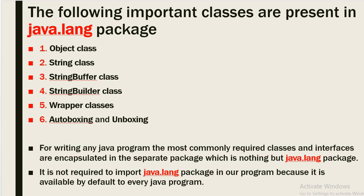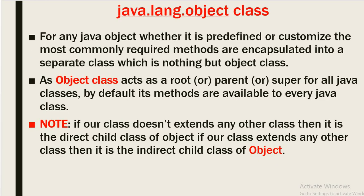Now we will discuss java.lang.Object class. For any Java object, whether it is predefined or user-defined, the most commonly required methods are encapsulated into a separate class — the Object class. The Object class acts as the root, or parent superclass, for all Java classes. By default, its methods are available to every Java class.